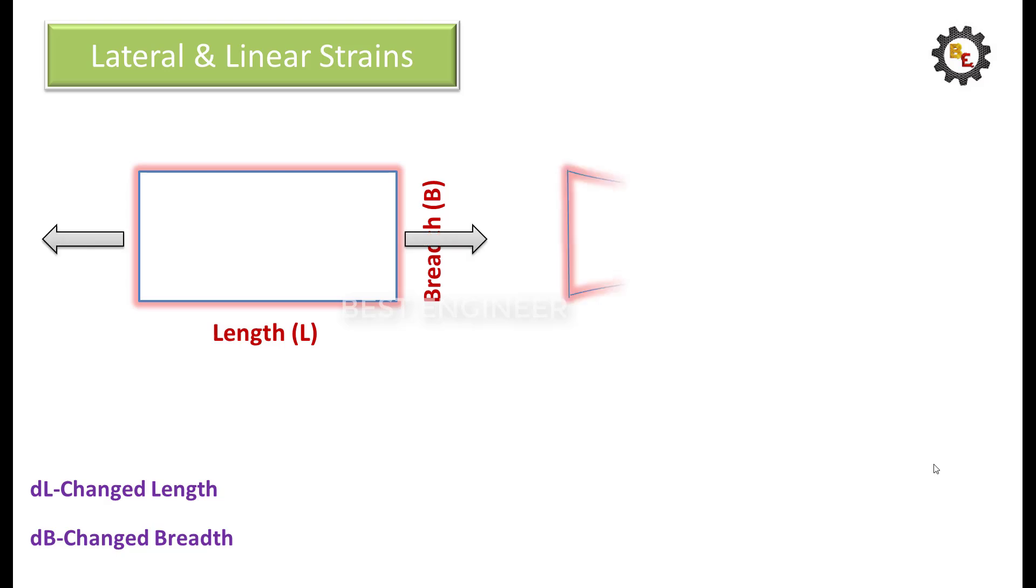Consider an object having a length L and breadth B. When the load is applied, it stretches in one direction and contracts in another direction as shown. Due to the tensile load, it increases the length by dL and breadth by dB.